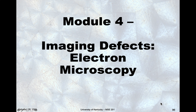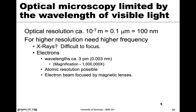In this module we're going to talk about imaging defects using electron microscopy as opposed to optical microscopy. Optical microscopy is somewhat limited in what it can do. Because we are using visible light, the resolution of optical microscopy is limited by that wavelength of visible light. That resolution is on the order of 10 to the minus 7 meters, which is about 0.1 microns or 100 nanometers — that's the best we can do.